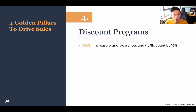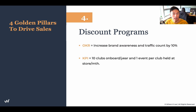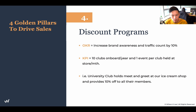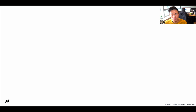The OKR for cross-promos is to increase brand awareness for the ice cream shop, with the key result being a traffic count increase of more than 10%. The KPI is to sign up 10 clubs per year and have at least one event per club held at our store. You can stagger these throughout the year so you're not pushing all the traffic at once, giving you a consistent stream of revenue. For example, a university club hosts a meet-and-greet at our ice cream shop, and we provide 10% off to all their members — a win-win for the brand and the club.